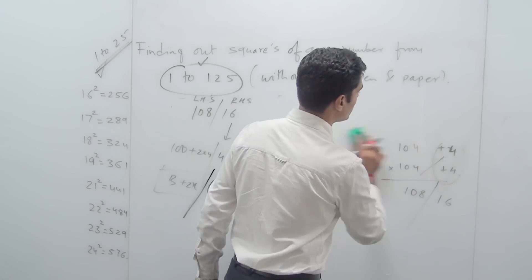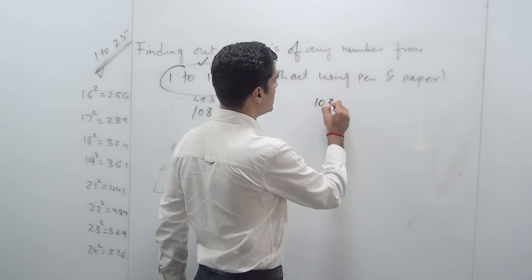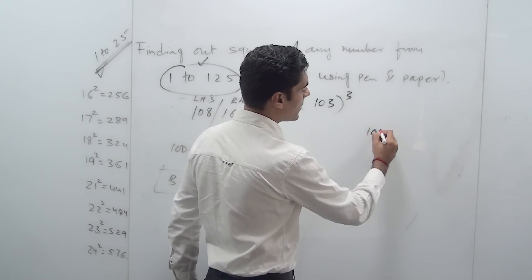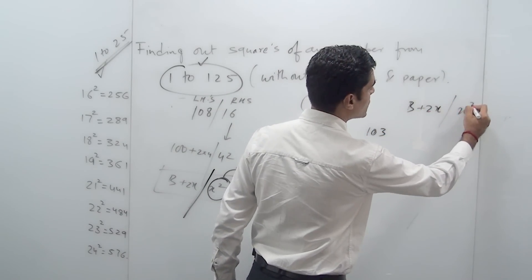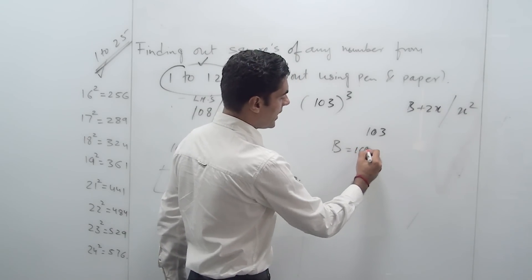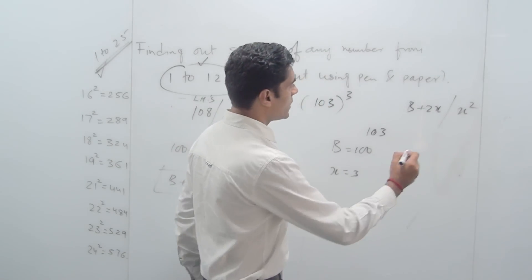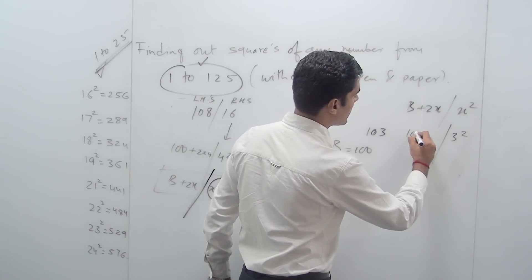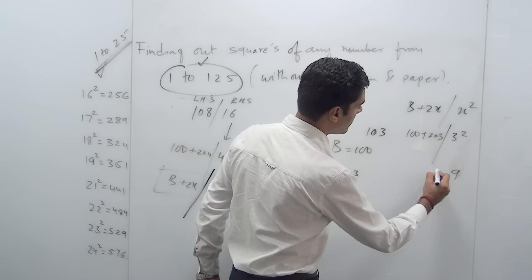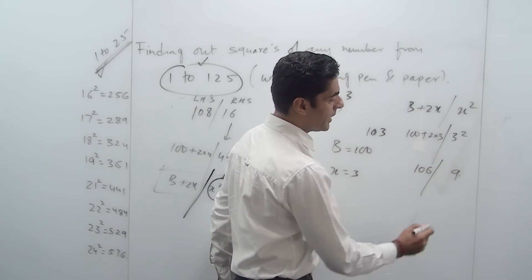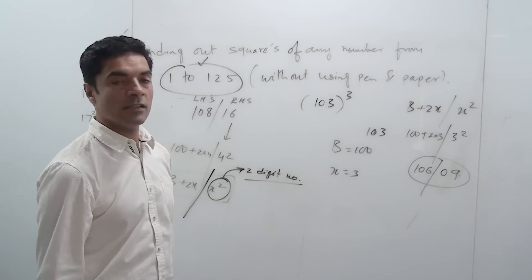Let's say I want to find the square of 103. My number is 103. The shortcut is b + 2x slash x². The value of b is 100 and x is 3. So the right-hand side is 3² = 9, and the left-hand side is 100 + 2×3 = 106. But you have to make it a 2-digit number by putting a 0 in front of it. So the answer is 10609.